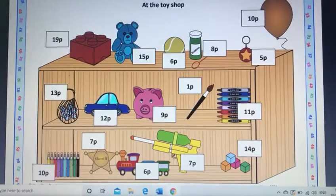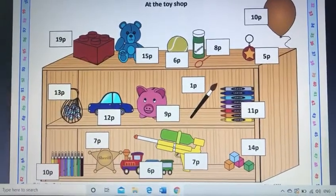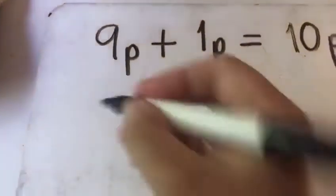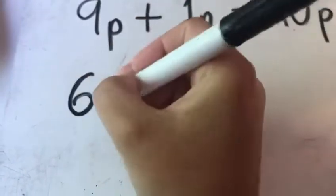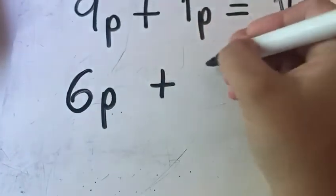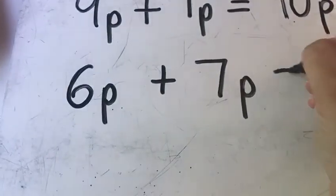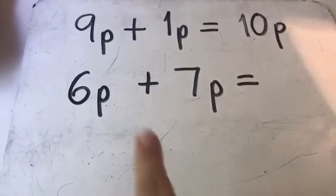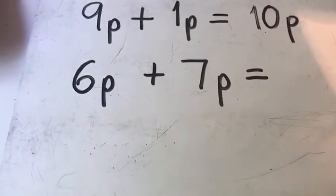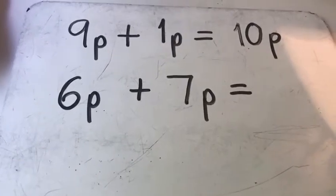What would my number sentence be? It would be 6p plus 7p. Now let's have a look. I know straight away that this is not a number bond to 10 and I also know straight away that this is not a number bond to 20.